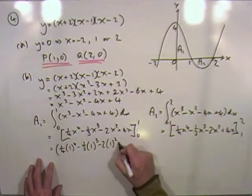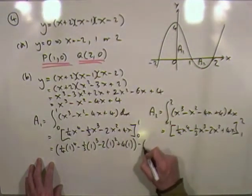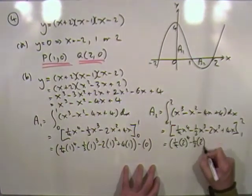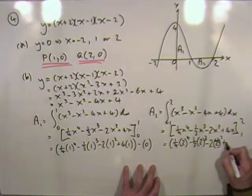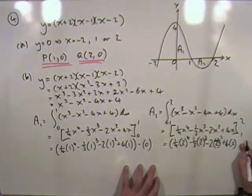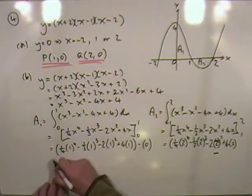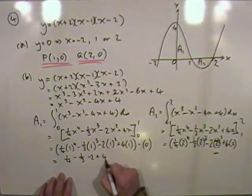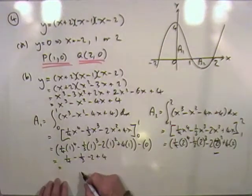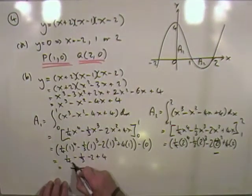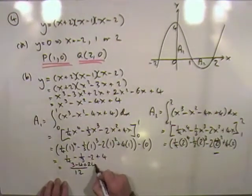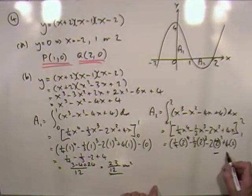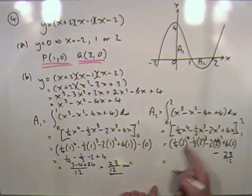Substituting x = 1 for area one: ¼ − ⅓ − 2 + 4, and subtracting the value at zero which is just zero. Putting everything over 12 gives 3 − 4 − 24 + 48 = 23, so area one is 23/12 square units.